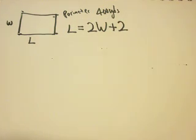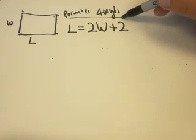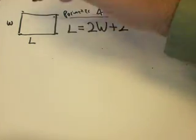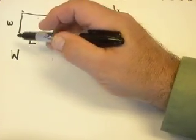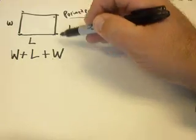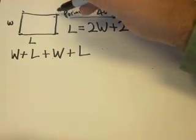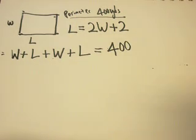But we have two variables — length and width — and we can't solve a two-variable equation with only one equation. We need another equation. We were told the perimeter is 400 yards, and the perimeter is the distance all the way around. So it's one width plus the length plus the other width plus the other length, and that equals the perimeter, which is 400 yards.